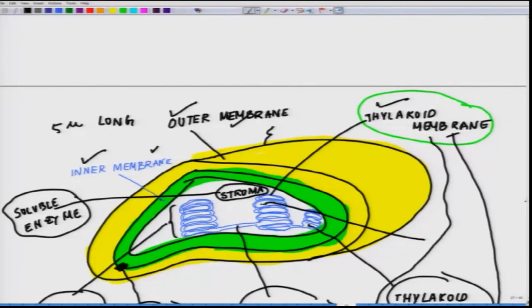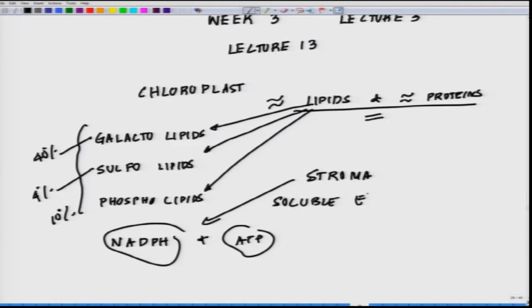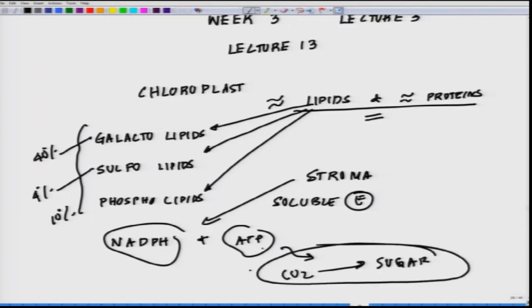These enzymes utilize NADPH and ATP synthesized by the thylakoid membrane. The soluble enzymes are utilizing this NADPH and ATP in order to convert CO2 into sugar. This is where the conversion of CO2 to sugar is happening, which is the reduction reaction. The chloroplast contains its own DNA and its own machinery for replicating and expressing it.